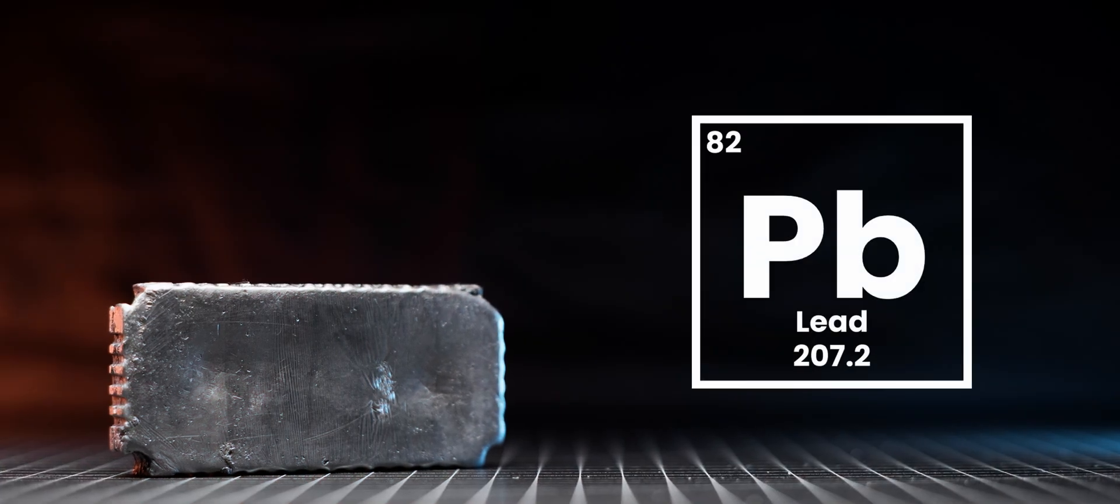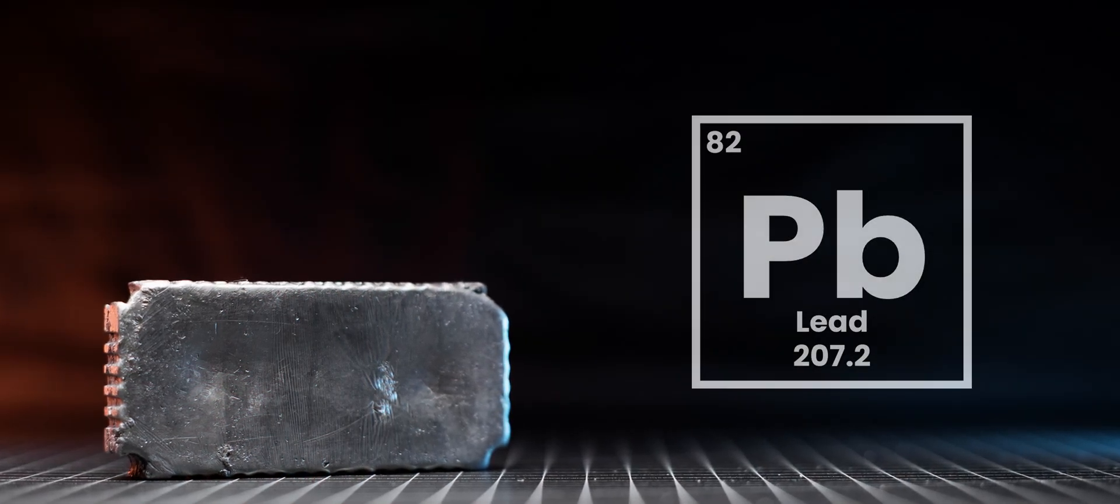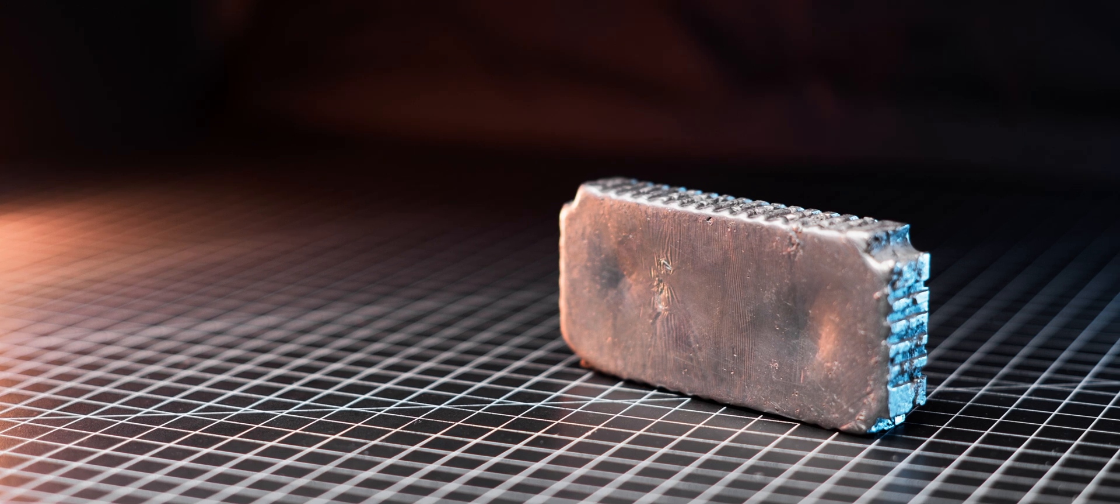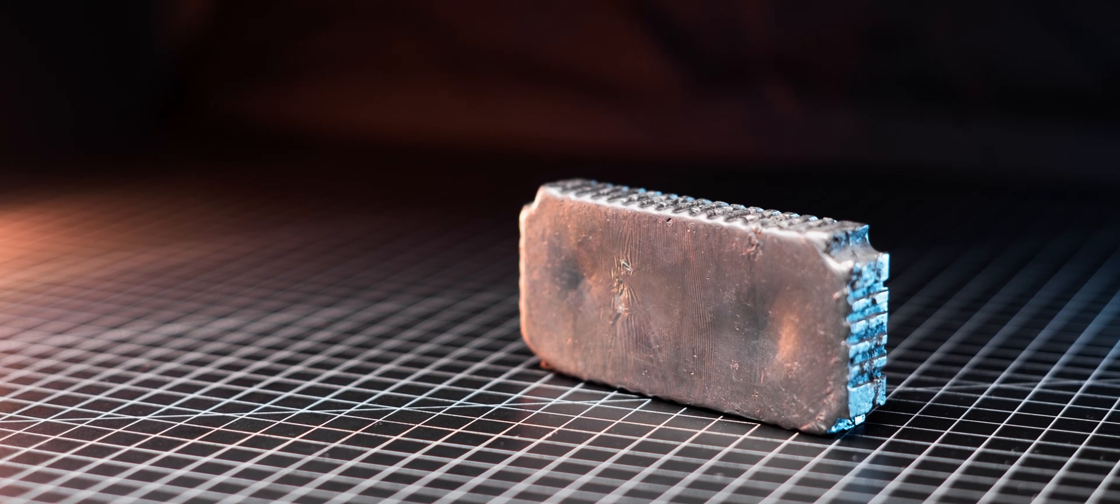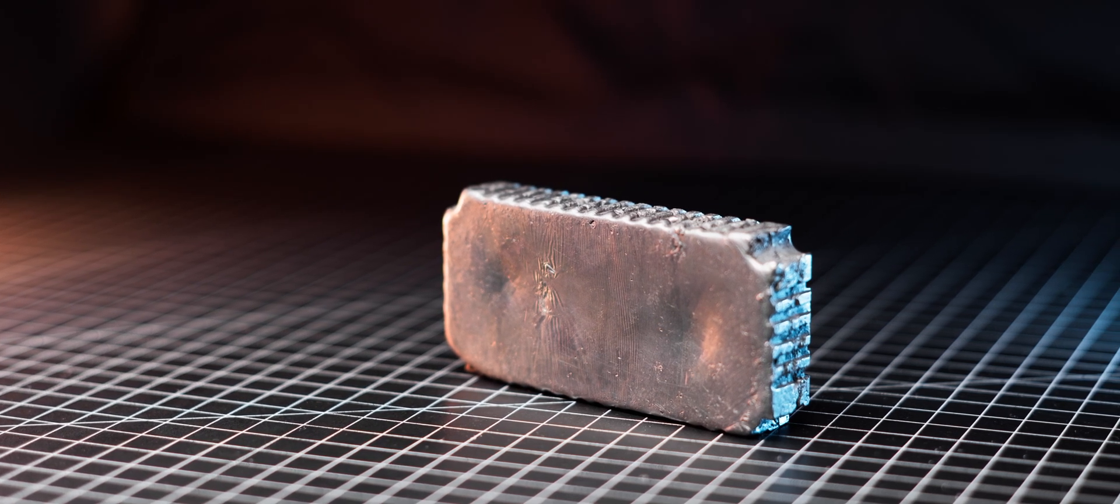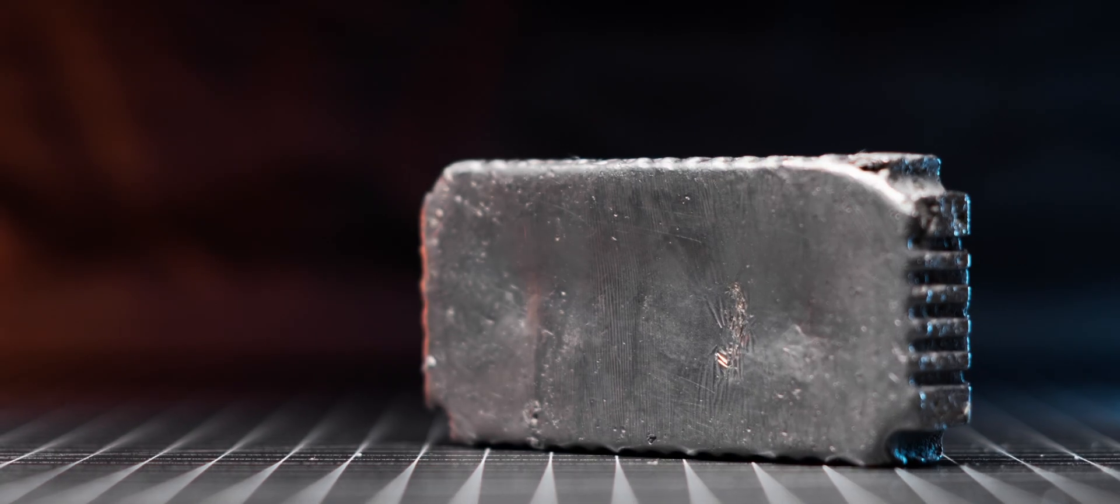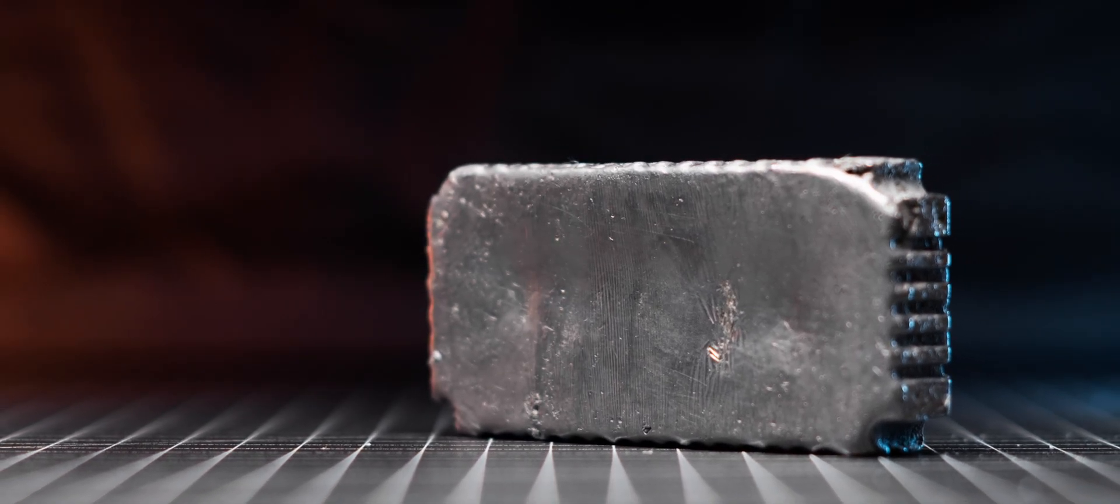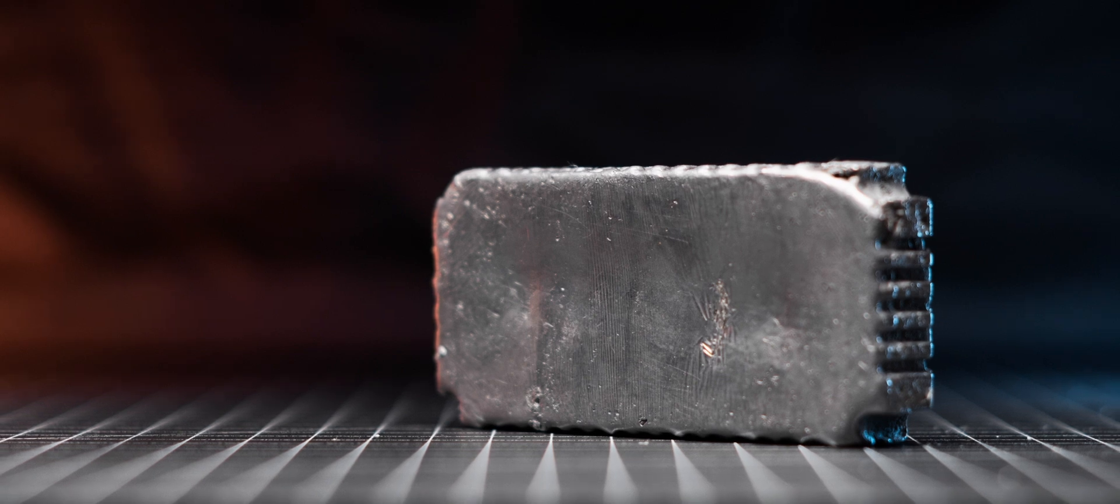The element lead is a dense heavy metal with an atomic number of 82, making it the heaviest stable element in the periodic table. Despite its high density, lead is surprisingly soft, which makes it very easy to bend and shape. In its pure form, lead has a silvery grey color similar to most metals, but when exposed to air it oxidizes and darkens over time.